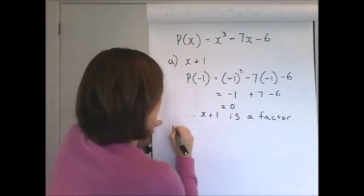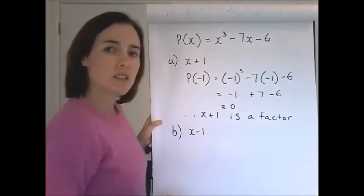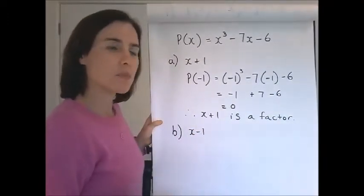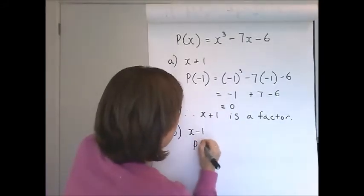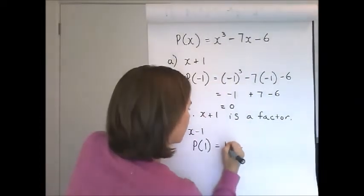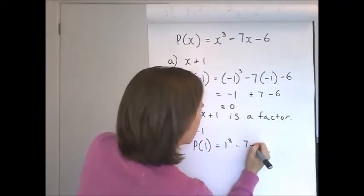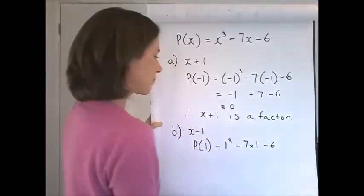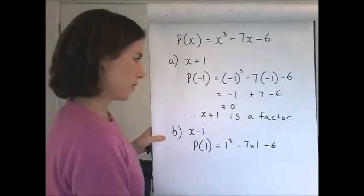Question B asked us to test x minus 1. So to test that, I need to substitute the same number with the opposite sign, positive 1: 1 cubed minus 7 times 1 minus 6. And if this equals 0, then x minus 1 is a factor.